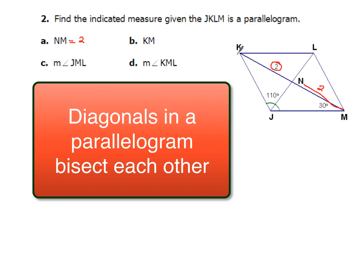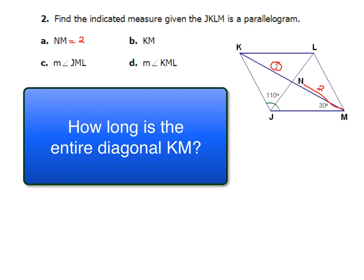Now from K to M, I want the entire piece. So I want this whole part from here all the way down. If I know each piece of that is 2, that means the whole thing is going to have a value of 4. So KM is going to be 4.